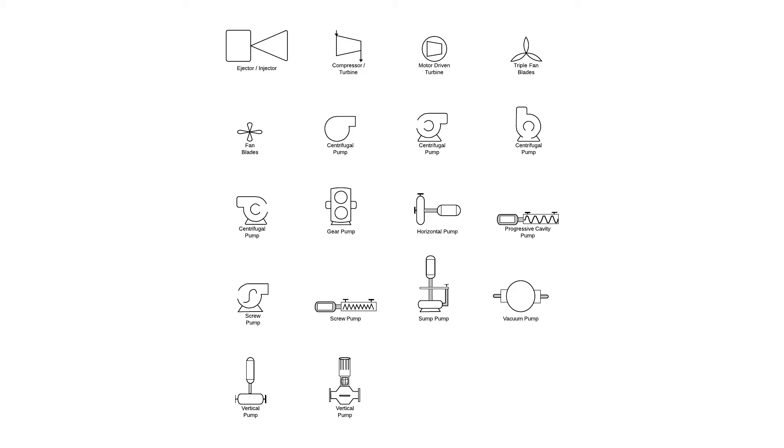So here are some more symbols that you might find on a P&ID from pumps to fan blades. Again, indicators, temp transmitters, temp recorder, flow recorder is FR, temp controller is TC, temp indicator would be TI.